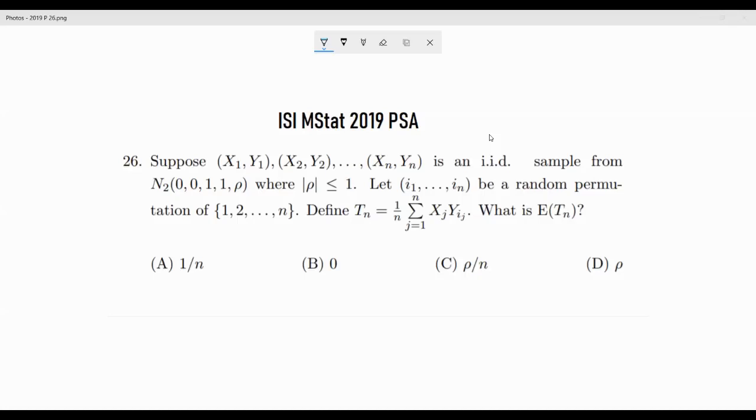It's random. So instead of taking 1, 2, we are taking a random permutation of 1 to n. And what we are defining is an estimate of something: T_n = (1/n) Σ X_j Y_{i_j}. This is a mean of this corresponding quantity. The expected value is the parameter that we are trying to investigate.